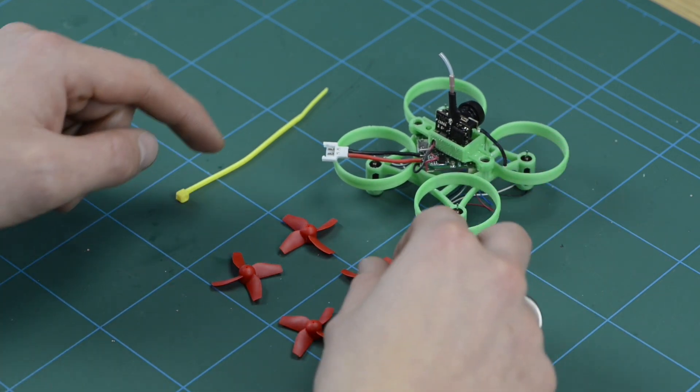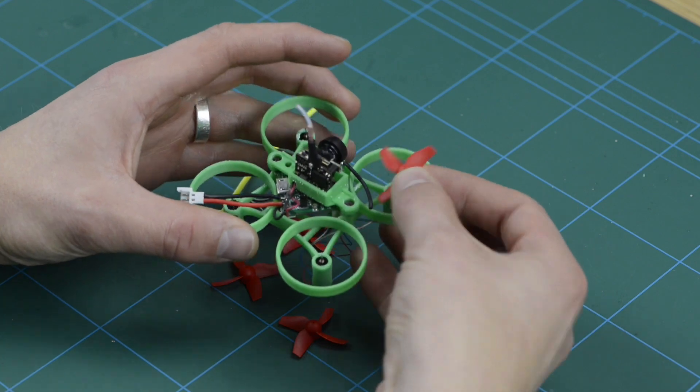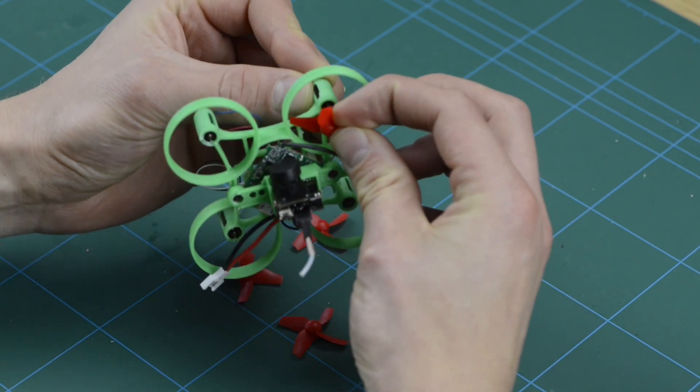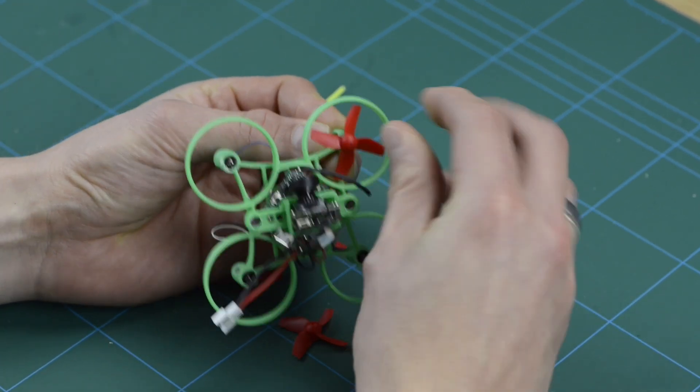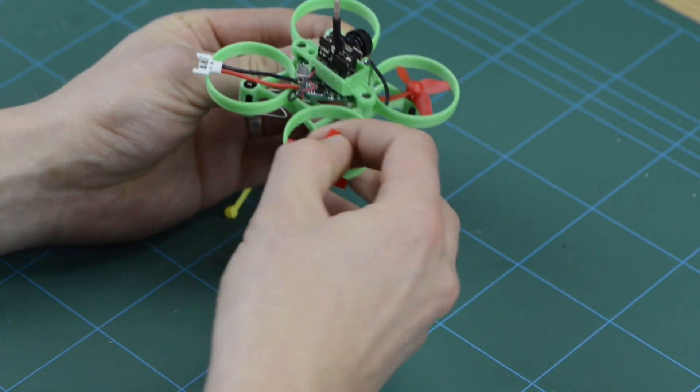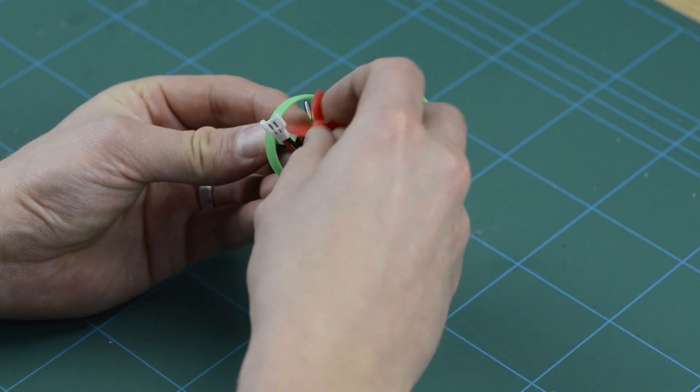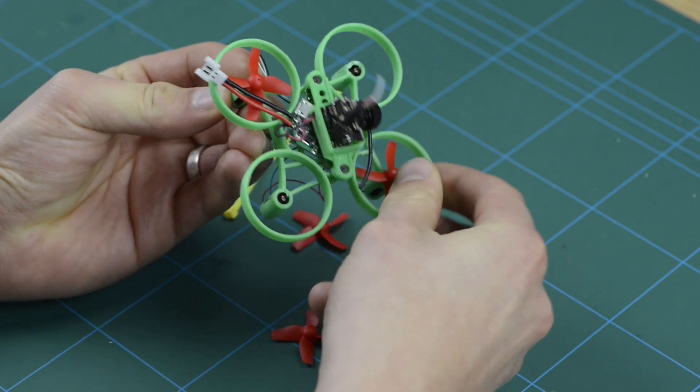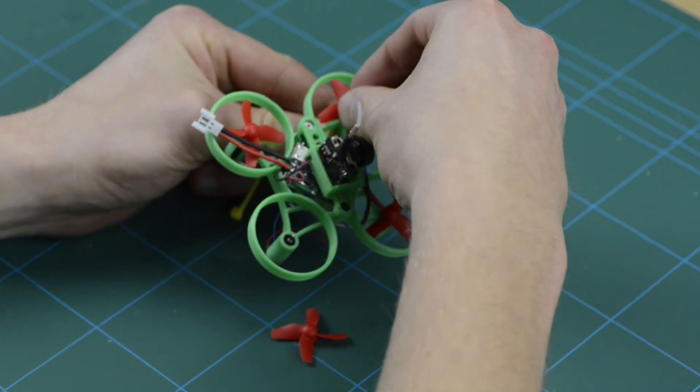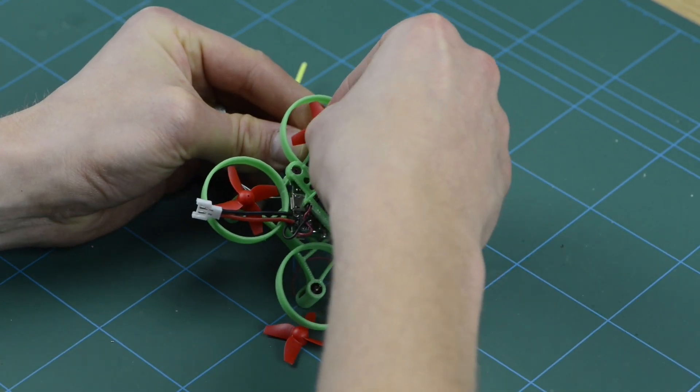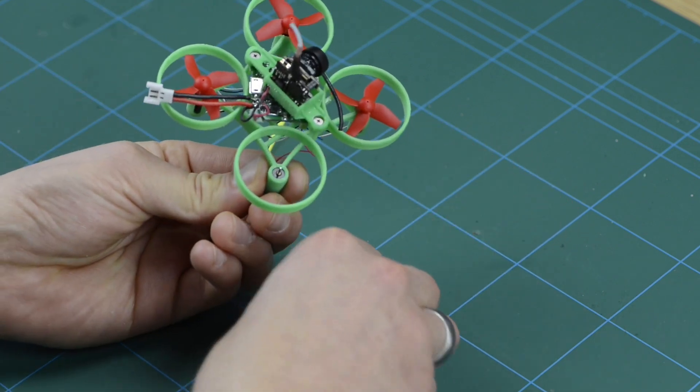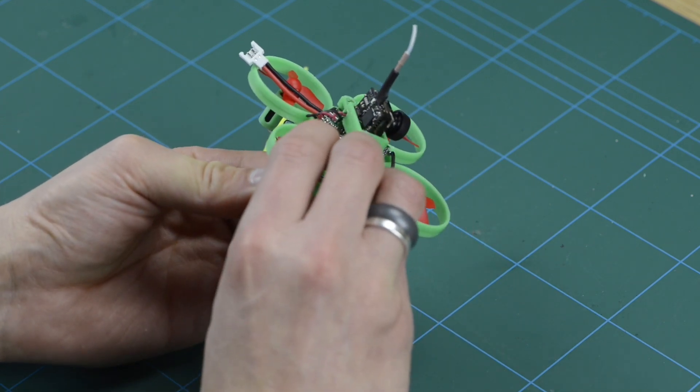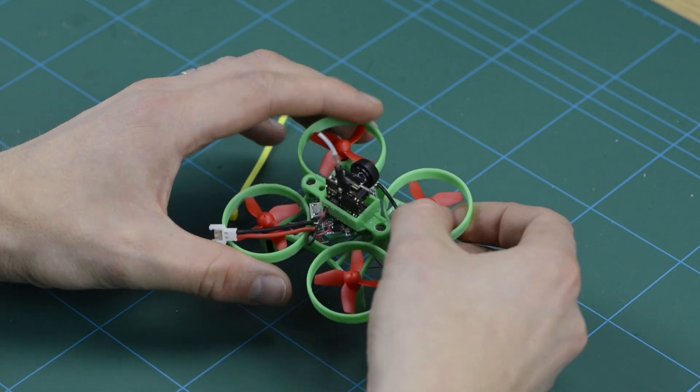So your counterclockwise is going on the front right, and these are just push fit, so you probably just want to support the back of the motor whilst you do it, and then push fit onto the motor shaft, onto the front left. My other counterclockwise propeller on the back left. And then my two clockwise props on the front left and back right. Just make sure they spin freely and don't foul on anything.